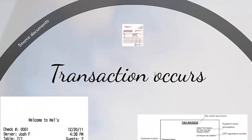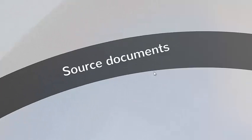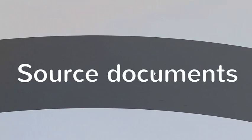It begins when a transaction occurs, and there are four different types that I'm going to show you. Each of these events is documented by a source document, which is like a contract that two parties enter into.